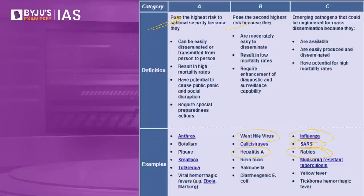In India, the Ministry of Home Affairs is the nodal agency for biowarfare. It partners with the Ministry of Health and Family Welfare and is responsible for assessing all threat perceptions, setting up deterrent mechanisms, and providing intelligence related to bioterrorism and biological warfare. When such an event occurs, high population density areas will be immediately hit, making more people susceptible to these infections and potentially leading to mass casualties.